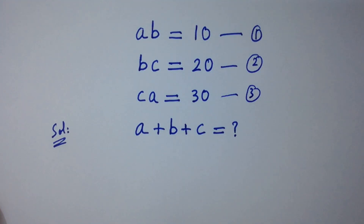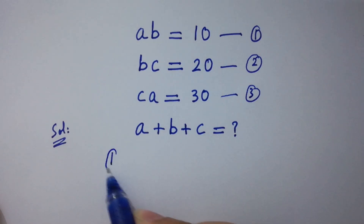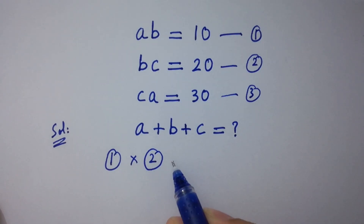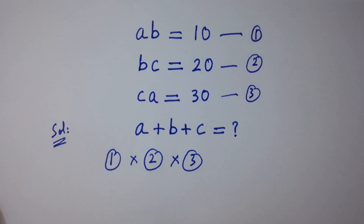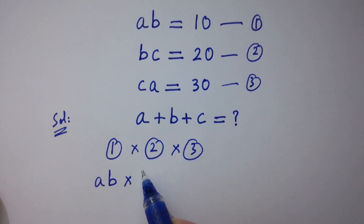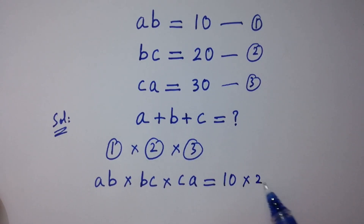To simplify this, multiply the first equation by the second, and the second equation by the third. We get ab times bc times ca equal to 10 times 20 times 30.